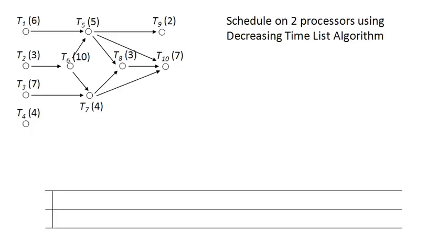So we want to schedule this digraph on two processors using the decreasing time list algorithm. The decreasing time list algorithm tells us how to form our priority list. It says form the priority list by listing the tasks from longest task to shortest task.